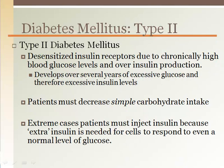Diabetes mellitus type 2, however, is developed over many years. It is where we have chronically too much insulin. If we eat too many simple carbs and sugars, we desensitize our insulin receptors on our cells. When we eat a normal amount of carbs, our body responds by making insulin, but because the receptors are so desensitized, it will not allow glucose to enter the cells. Therefore, the pancreas must increase insulin production even more. Over years and years, the pancreas gets overworked because it has to release so much insulin just for a little carbohydrate to get into the cells for energy.